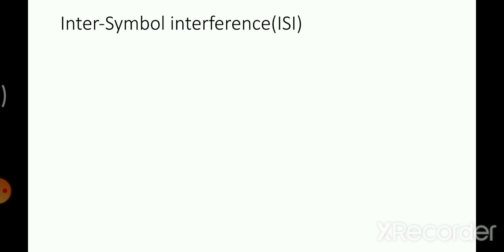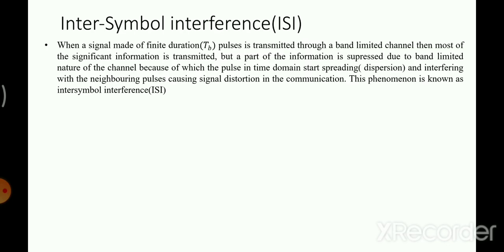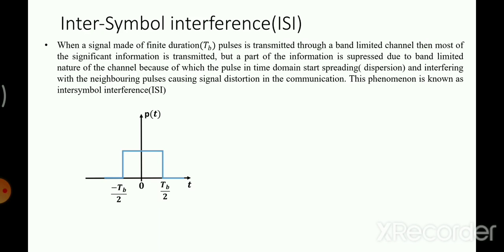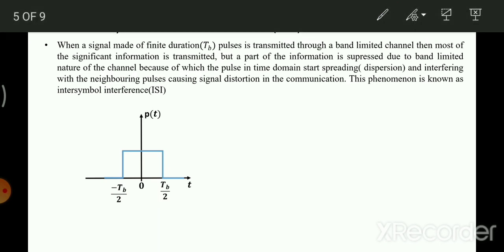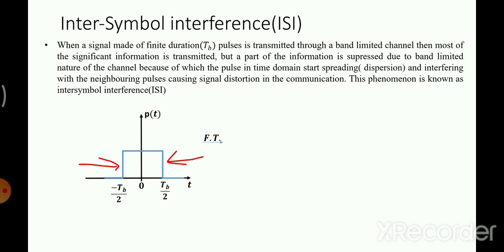In digital communication we most often transmit signals that look like rectangular pulses. When a signal of finite duration is transmitted — say a basic pulse p(t) with bit duration T_b — we need to examine its bandwidth. To find the bandwidth, we take the Fourier transform of the rectangular pulse, and the result is a sinc function in frequency domain. The sinc function has ideally infinite bandwidth.